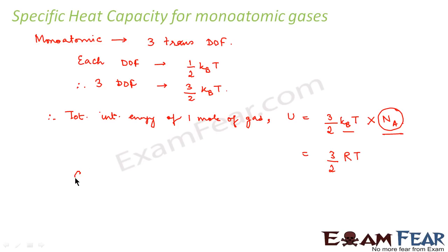Now, what is Cv, that is the specific heat capacity at constant volume, is equal to dU by dT. So that is equal to 3 by 2 R. So this is the value of specific heat capacity at constant volume. We also know that Cp minus Cv is equal to R.